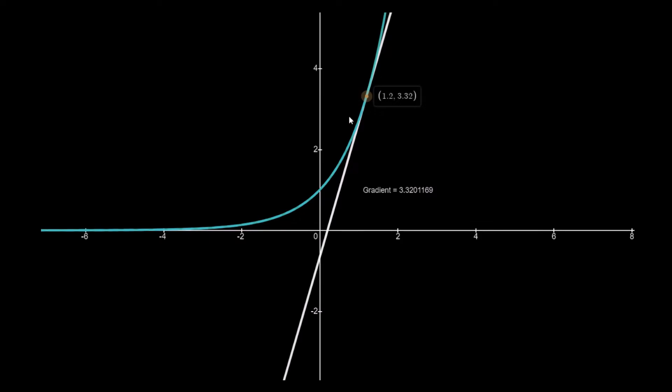Why is this function important in mathematics? If we think about the number 1 — if we multiply 1 by 1, we get the number 1 — and this is the only number in the real number line with this unique property. We can call this a unitary operator, where unitary means 1 and the operation is multiplication. The same thing can be said for the exponential function: it's a unitary operator, but for the operation of differentiation. So if we differentiate e to the x, we get e to the x, and if we differentiate it again we get e to the x, and so on — just as multiplying 1 by 1 by 1 always gives 1.